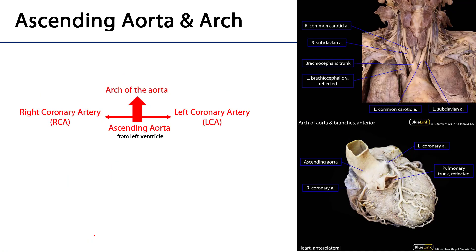The systemic loop begins in the left ventricle. Blood is pushed out through the aortic valve into the ascending aorta. We can differentiate the ascending aorta from the pulmonary trunk because we can see the coronary arteries, which are the only branches of the ascending aorta. There is a left and a right coronary artery, and these arteries serve the heart.